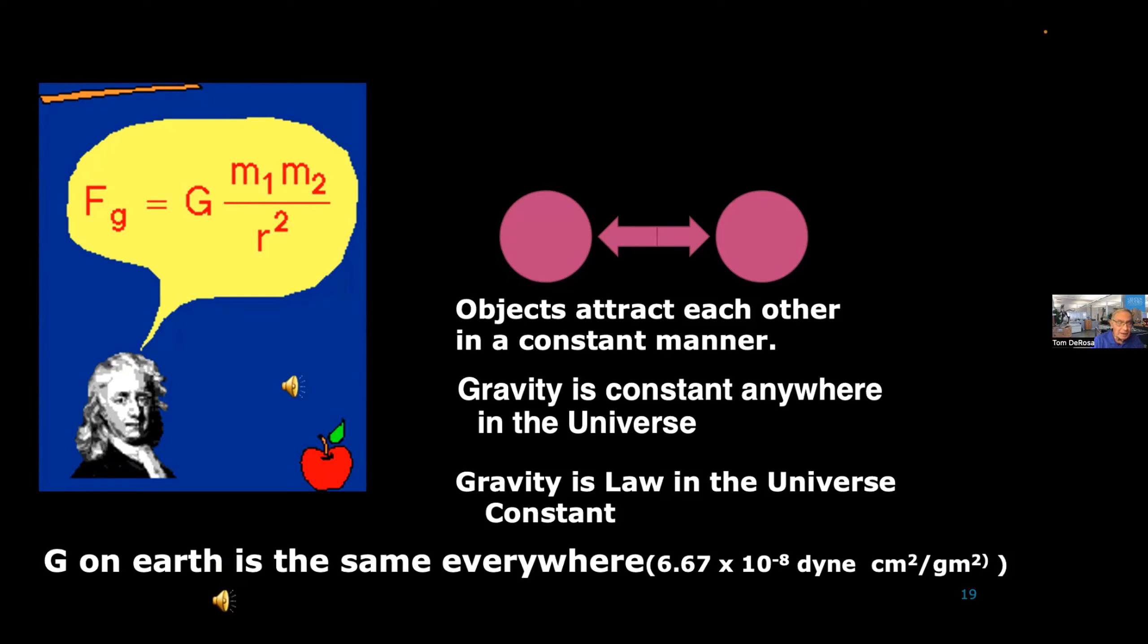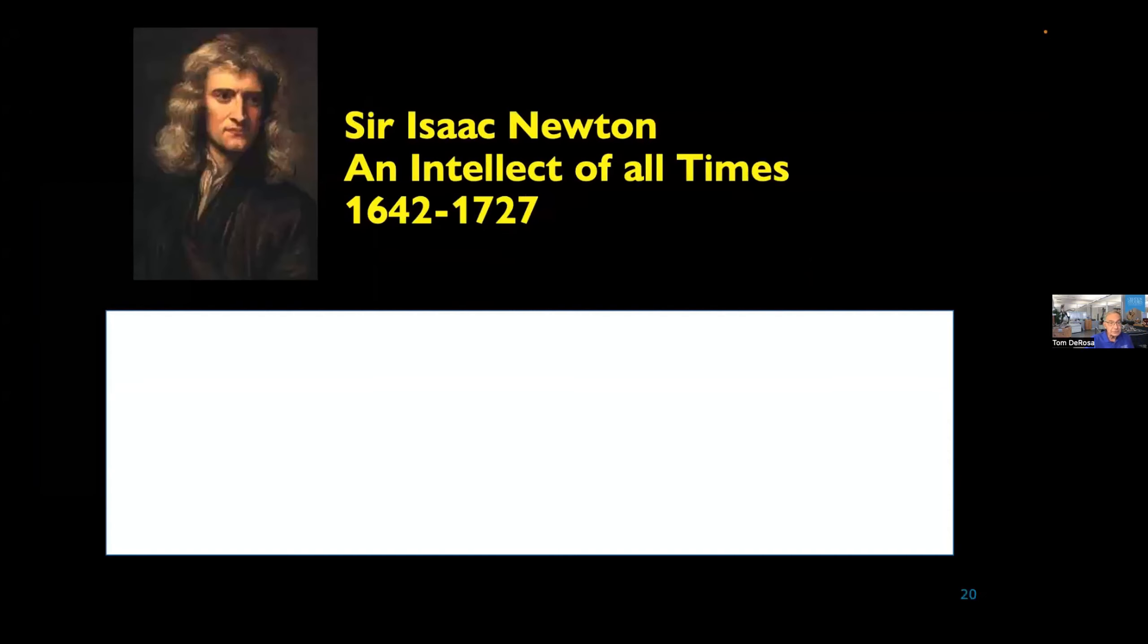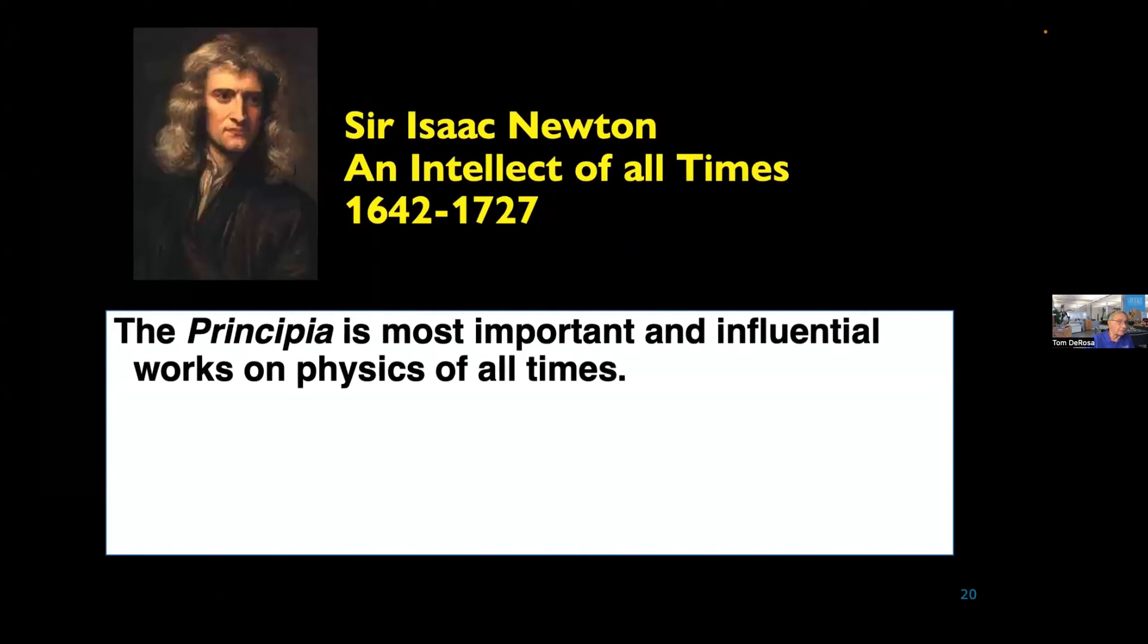But really what makes it work is this constant right in here, this big G. You see it? Without that big G, we couldn't solve it. Well, what are you talking about? That G is a constant. It never changes. And because it never changes, everything is moving in exact motion. Where did that come from? Where did that G come from? So we look, and we understand that that had to be from God himself. And Sir Isaac Newton definitely made that conclusion.